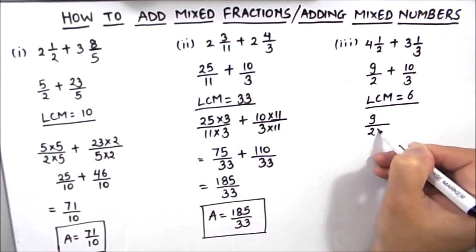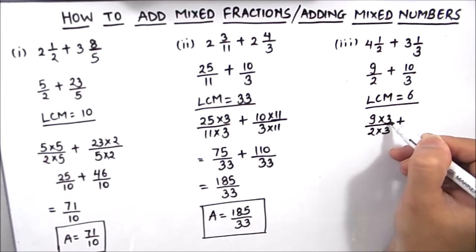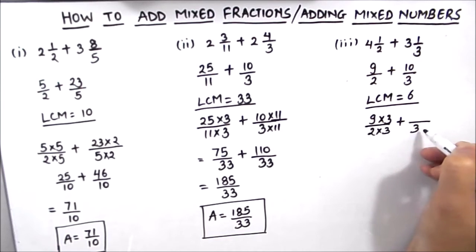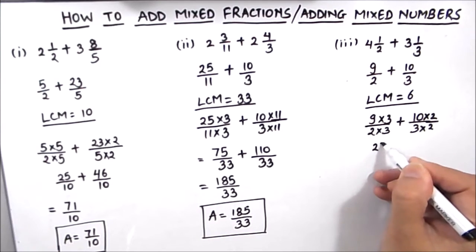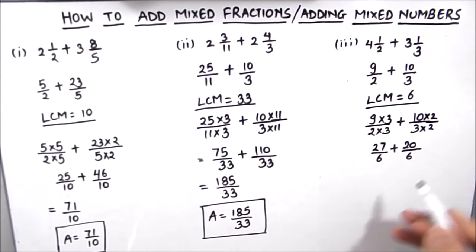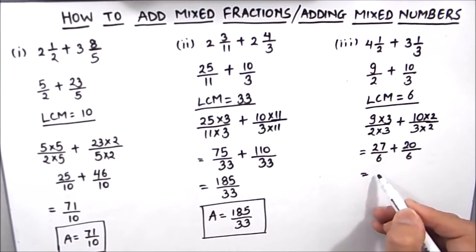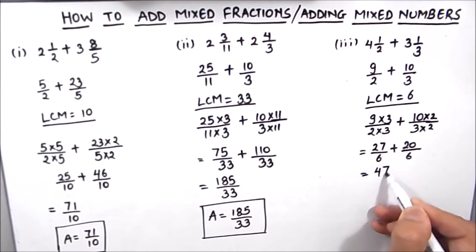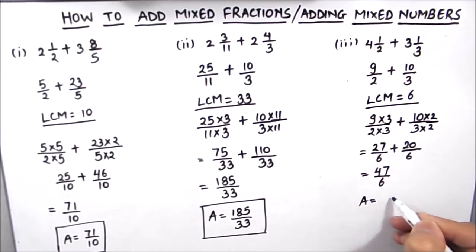Let's make the denominators of the two fractions equal. 2 times 3 is 6, so we'll do 9 times 3 in the numerator. And 3 times 2 is 6, so we'll do 10 times 2 in the numerator. Now 9 times 3 is 27, divided by 6, plus 10 times 2 is 20, divided by 6. Now both the denominators are equal, so we can add the fractions directly by adding the numerators. 20 plus 27 will be 47 divided by 6. We cannot reduce the fraction further, so the final answer will be 47/6.